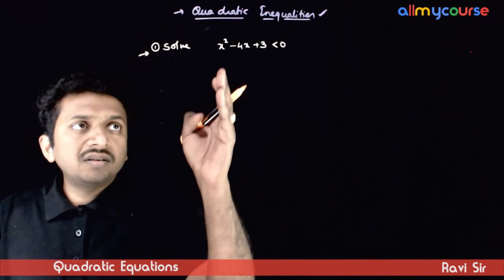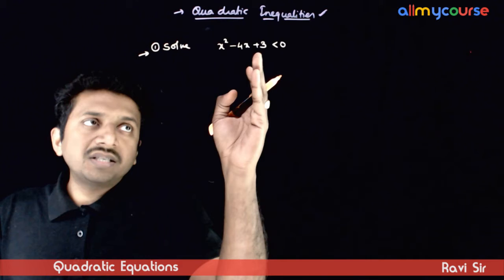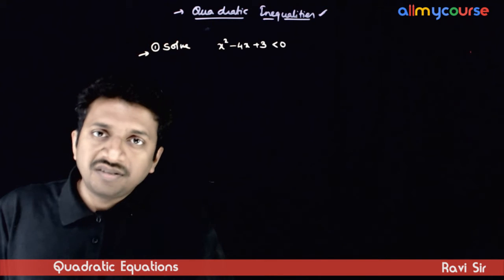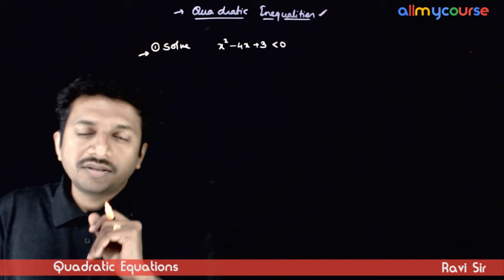The first question that we are going to solve is x square minus 4x plus 3 is less than 0. If you are asked to solve this.